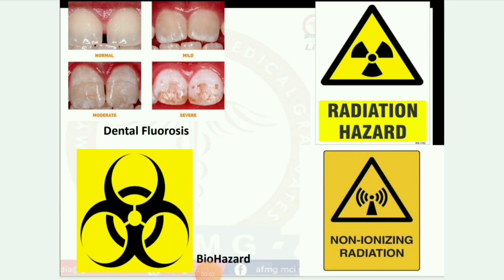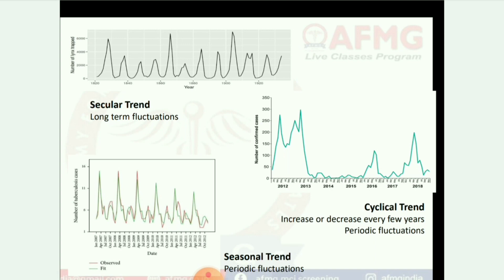Next image shows dental fluorosis. Then: biohazard logo, radiation hazard logo, and non-ionizing radiation logo. Next image shows some graphs: secular trend (long-term fluctuations), cyclic trend (increase or decrease every few years, periodic fluctuations), and seasonal trend (periodic fluctuations).